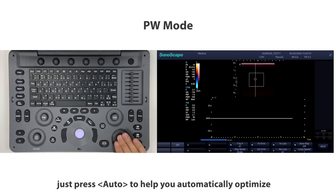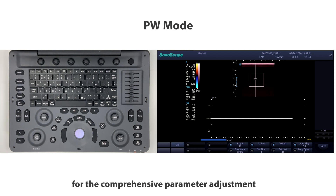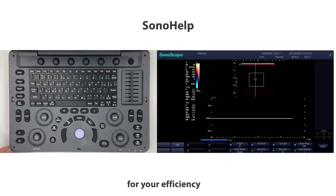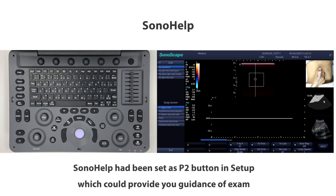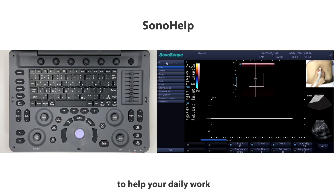Don't forget to freeze after you get the PW image you want. If you want to optimize your image more easily, press Auto to automatically optimize B, color, and PW mode — it saves time for comprehensive parameter adjustment. The E-series is also equipped with practical functions such as Sona Help, which provides guidance for the exam, along with other valued function buttons on the keyboard.